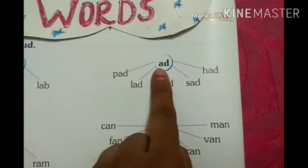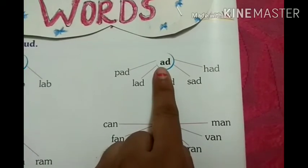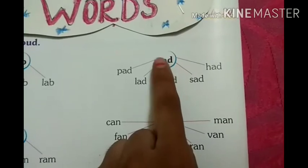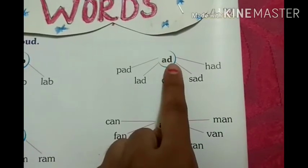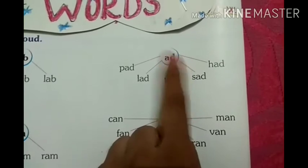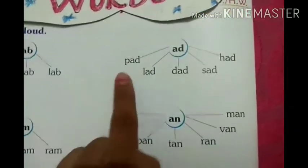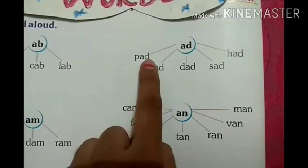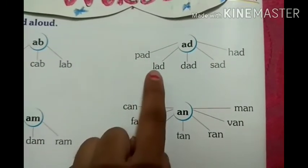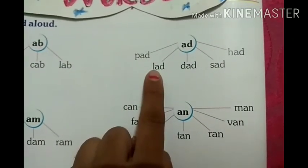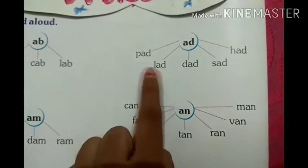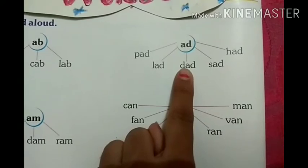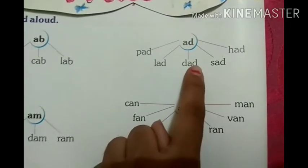What is the sound of A? A. And what is the sound of D? D. A, D — AD. And A, D — AD. What is the sound of A-L? And what is the sound of D? D. And that.